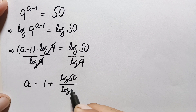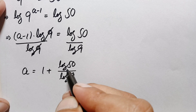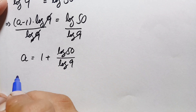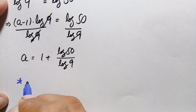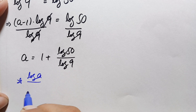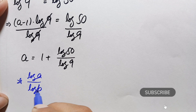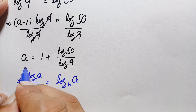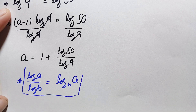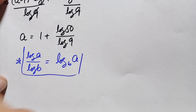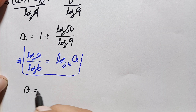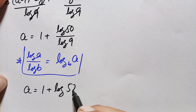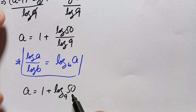We apply the change of base logarithm identity: log(a) / log(b) = log_b(a). Using this identity, the expression log(50) / log(9) becomes log base 9 of 50. So our answer in terms of logarithms is a = 1 + log_9(50).